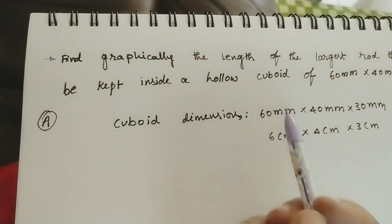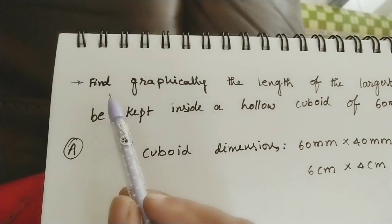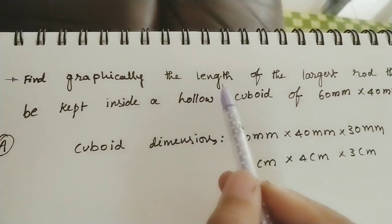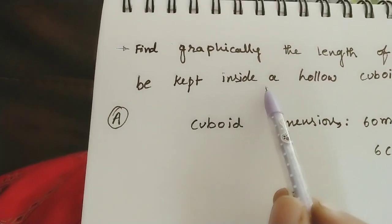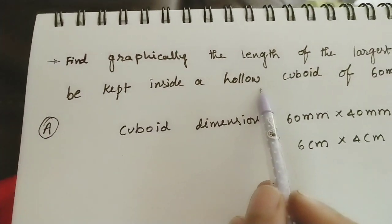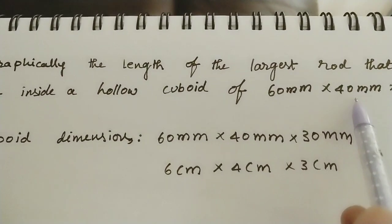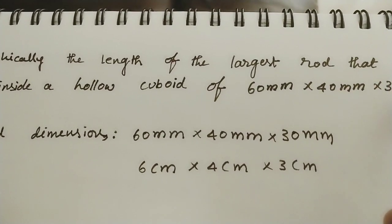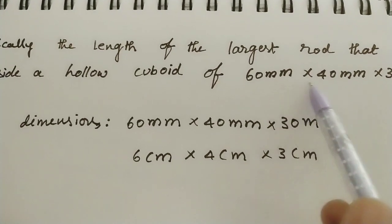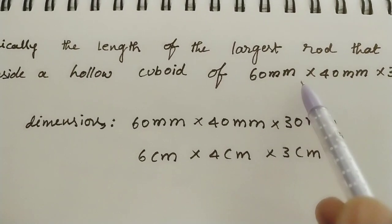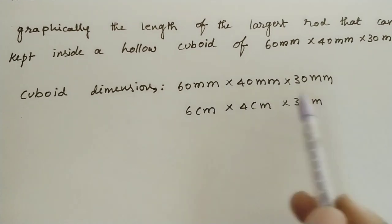Projections means front view of the object and top view of the object. Find graphically the length of the largest rod that can be kept inside a hollow cuboid of 60mm by 40mm by 30mm. These are the cuboid dimensions. In the answer I am writing the cuboid dimensions as given.